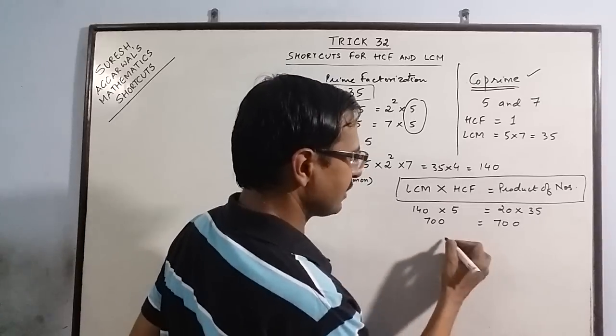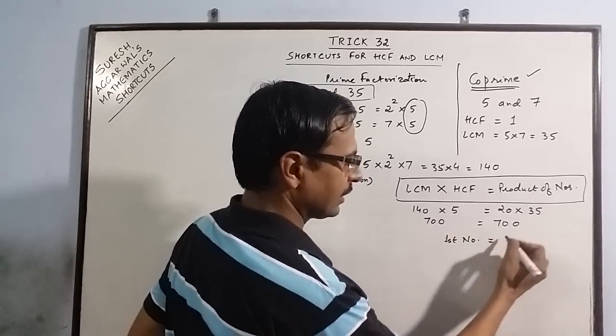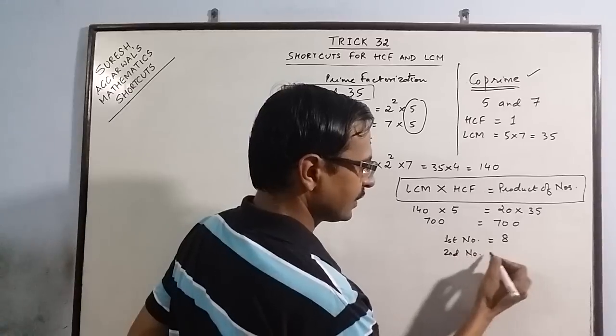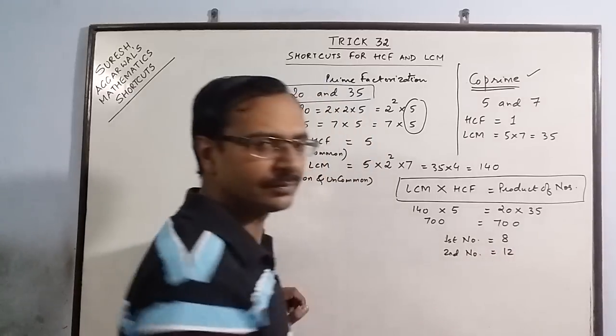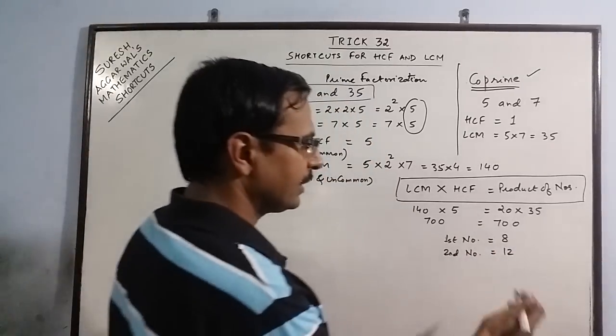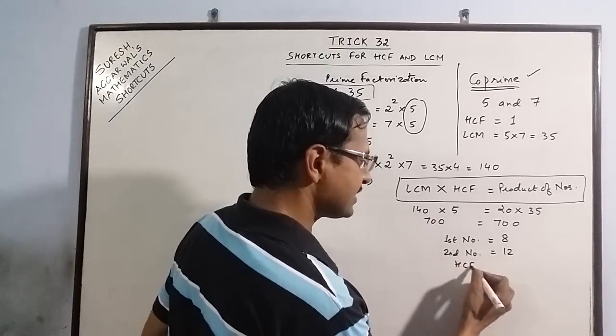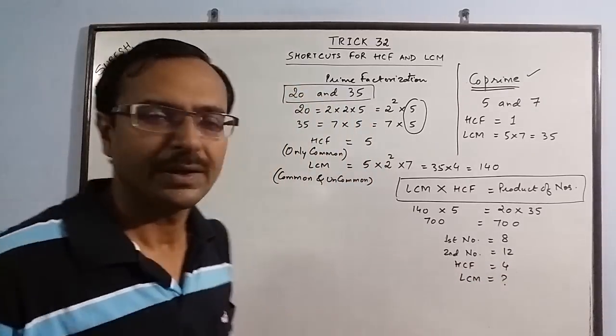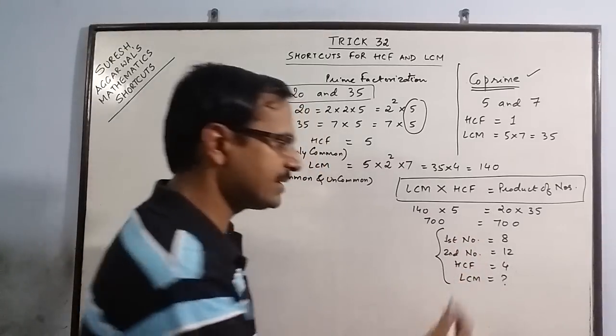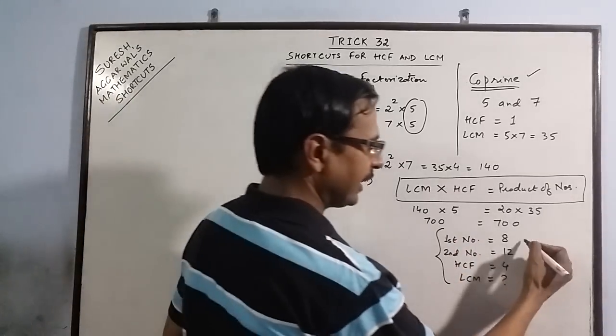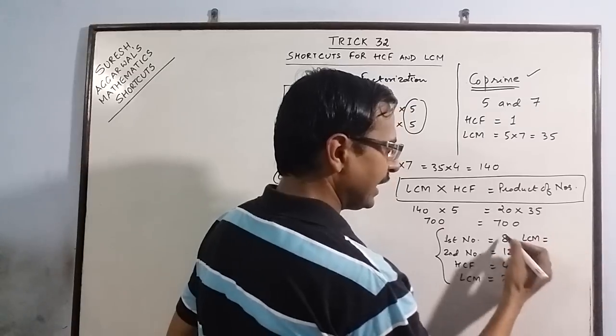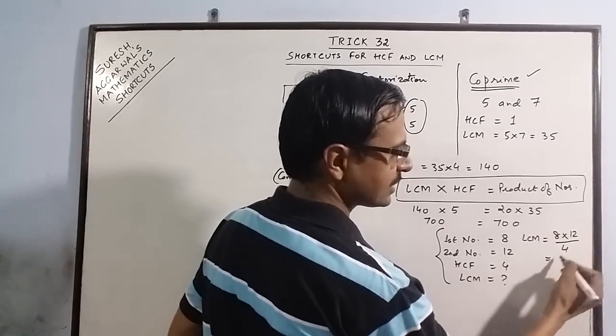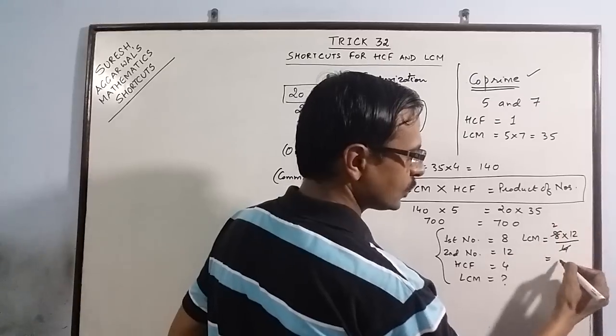So suppose we are given 2 numbers. Say we are having 1st number as 8 and 2nd number as 12. We are given that their HCF is 4 and we are to find their LCM. Now we don't have to factorize just for finding the LCM. Take the product of numbers and divide it by HCF. So answer will be 24.